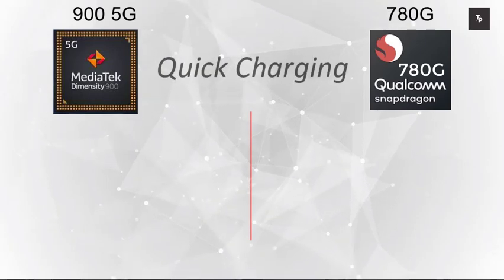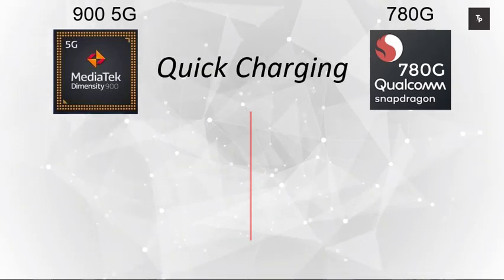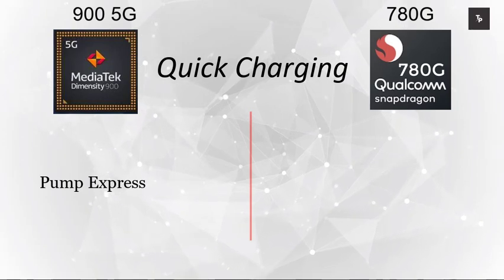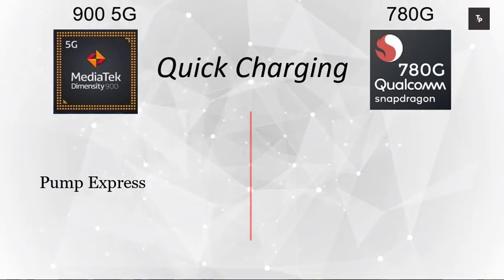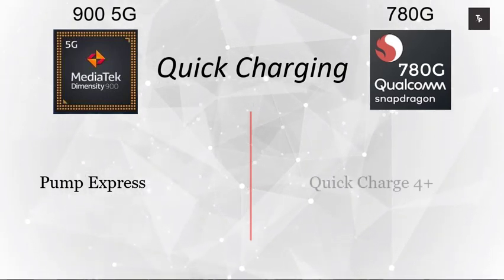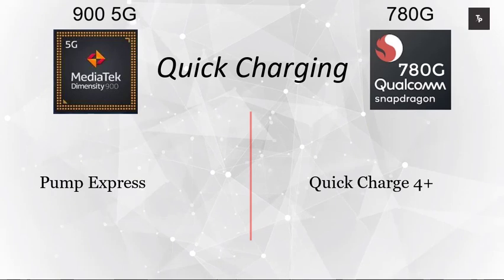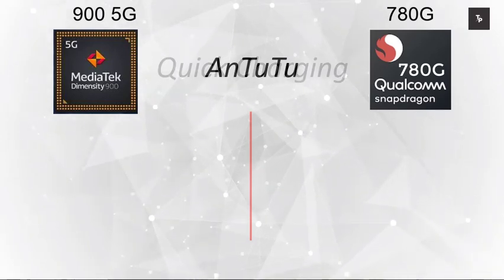Regarding quick charging support, the MediaTek Dimensity 900 uses its own standard charging solution called Pump Express, whereas the Snapdragon 780G supports Quick Charge 4+, which sits just below Quick Charge 5.